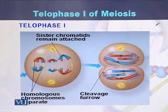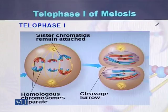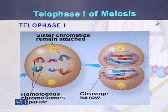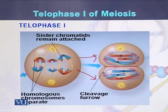In telophase, 3 chromosomes have arrived at one pole while the other 3 chromosomes have arrived at the other pole. The cell in the beginning contains 6 chromosomes, and that number is now reduced to 3 chromosomes in each half. There is a cleavage furrow between these 2 cells, and ultimately a single cell is converted into 2 cells.